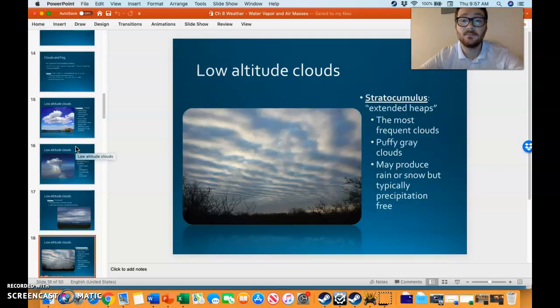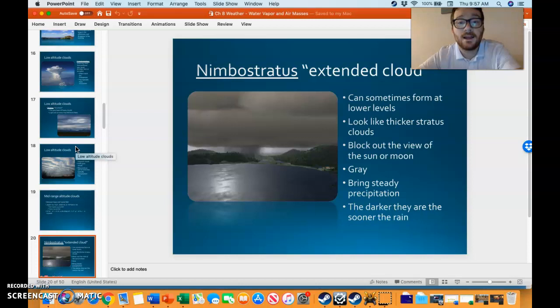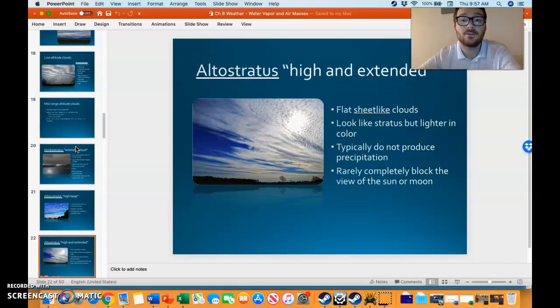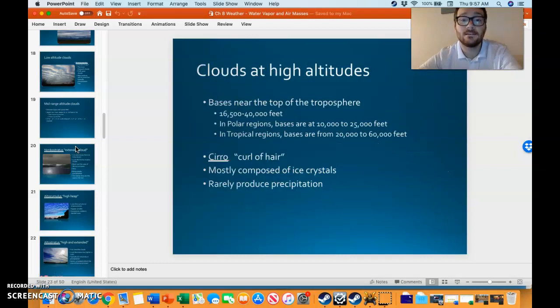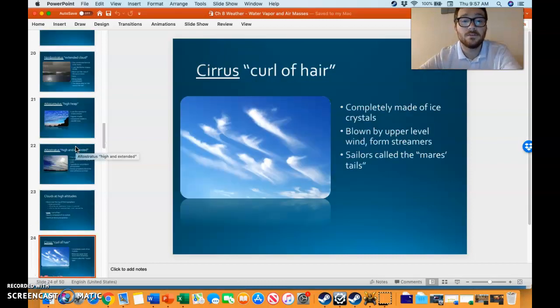Stratocumulus are the extended heaps, very frequently found here in Florida. Nimbostratus is the extended cloud, a very thick layer blocking out the view of the sun. Altocumulus is like cumulus except in the higher levels of the atmosphere. Altostratus is high and extended, sheet-like but high in the atmosphere.